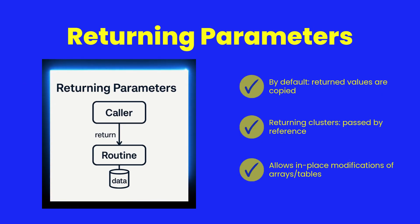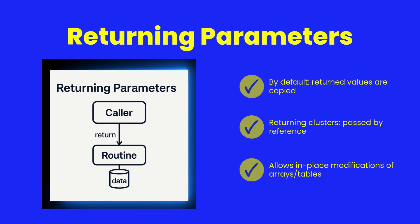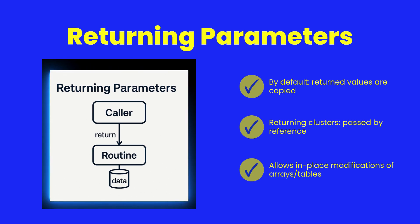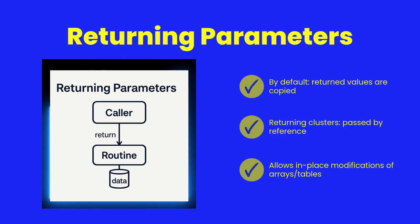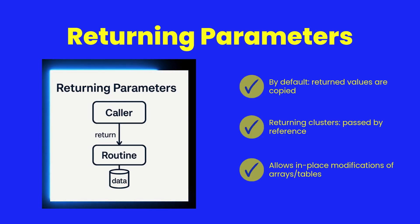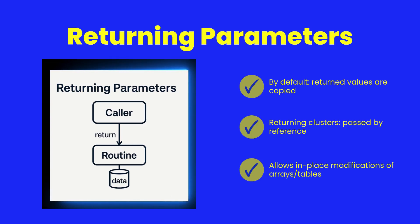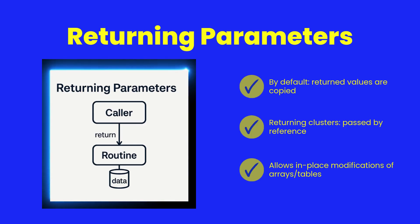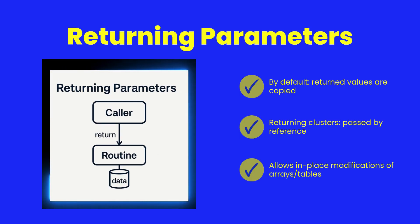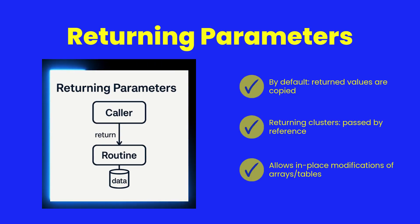When a routine returns values in Shear Power, the default behavior is simple: return values are copied back to the caller. But there's one very important exception — clusters. Returning clusters are passed by reference. That means instead of making a copy, the routine works directly with the original cluster, allowing powerful in-place modifications like adding rows to an array or updating fields in a table, without any extra overhead.